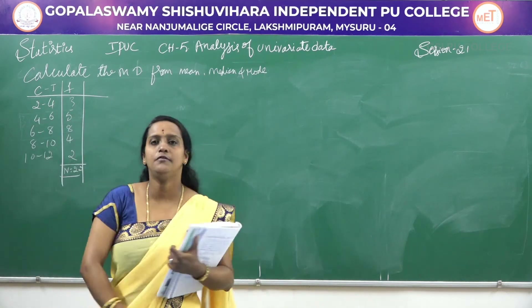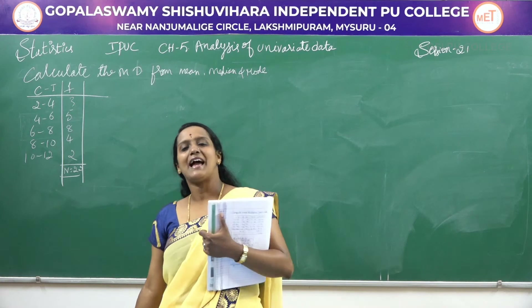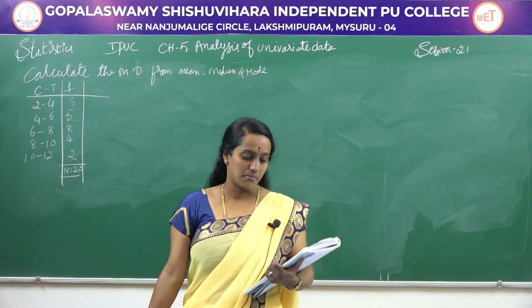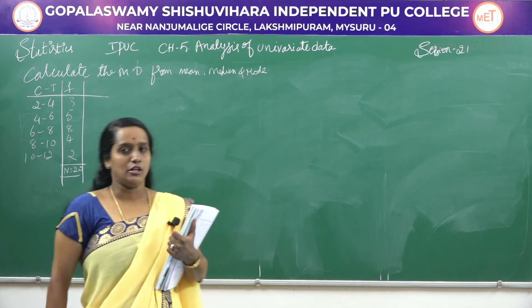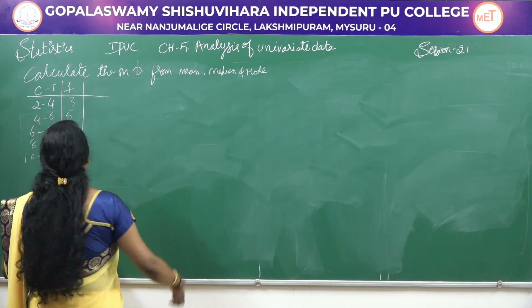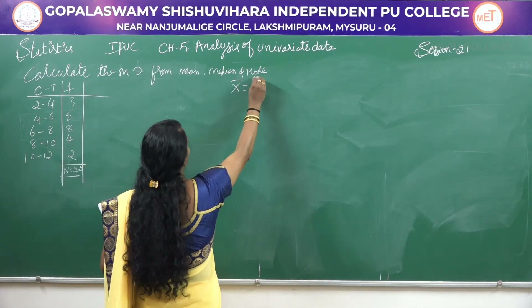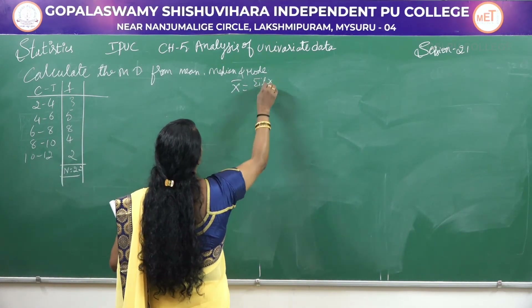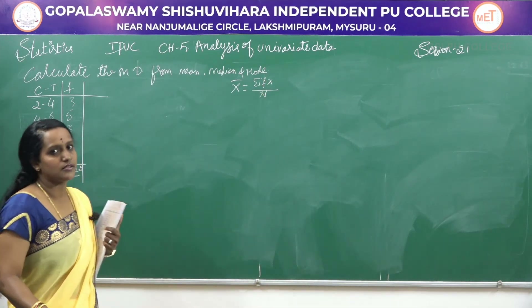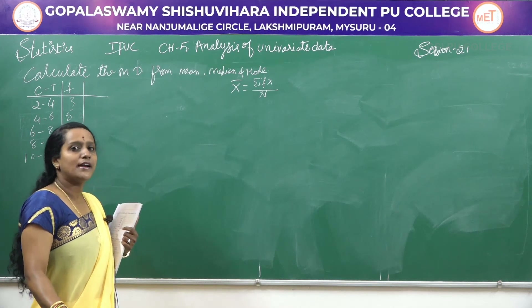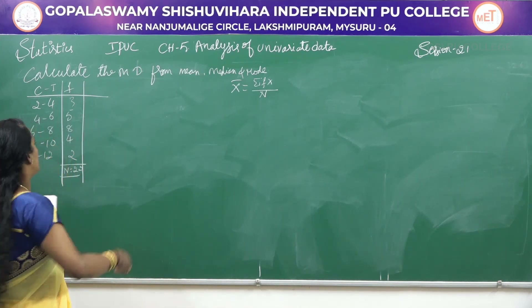Let us solve first the mean deviation using mean value. To calculate mean deviation using mean, the first step is we have to find out the mean value. To find the mean, x̄ = Σfx / N. Since this is a class interval, we have to find out the midpoint, and the midpoint itself is the x value.